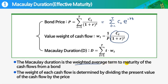Weighted average term to the maturity of the cash flows from a bond. And the weight of each cash flow is determined by dividing the present value of the cash flow by the price.